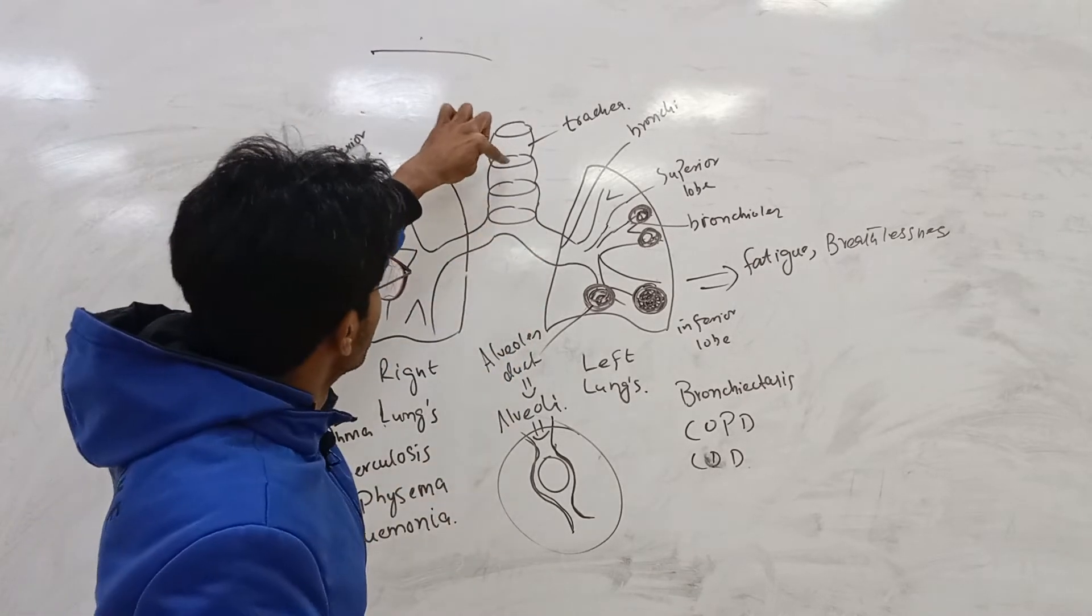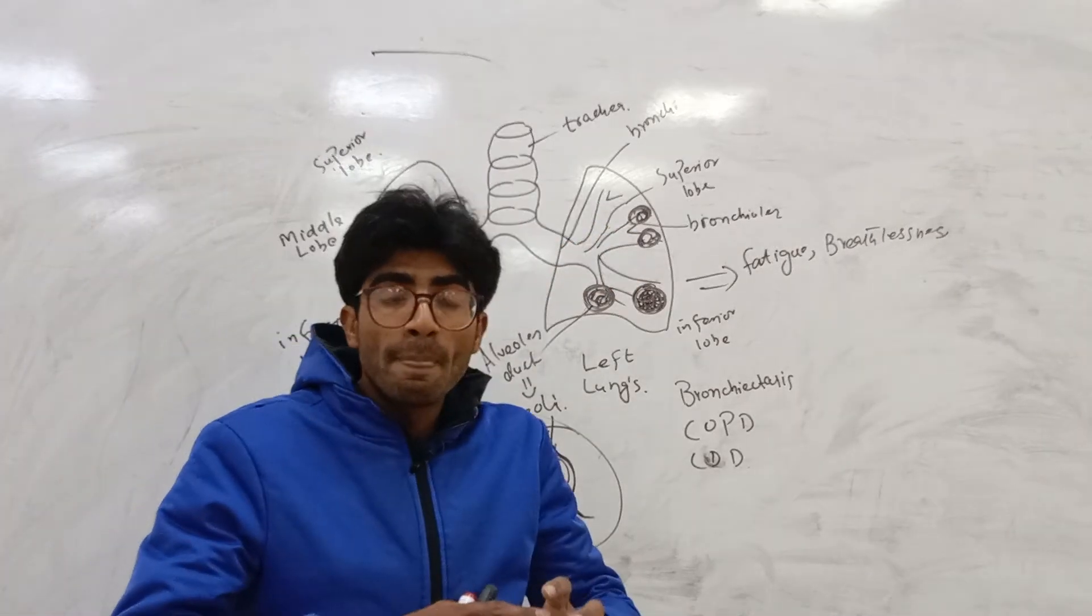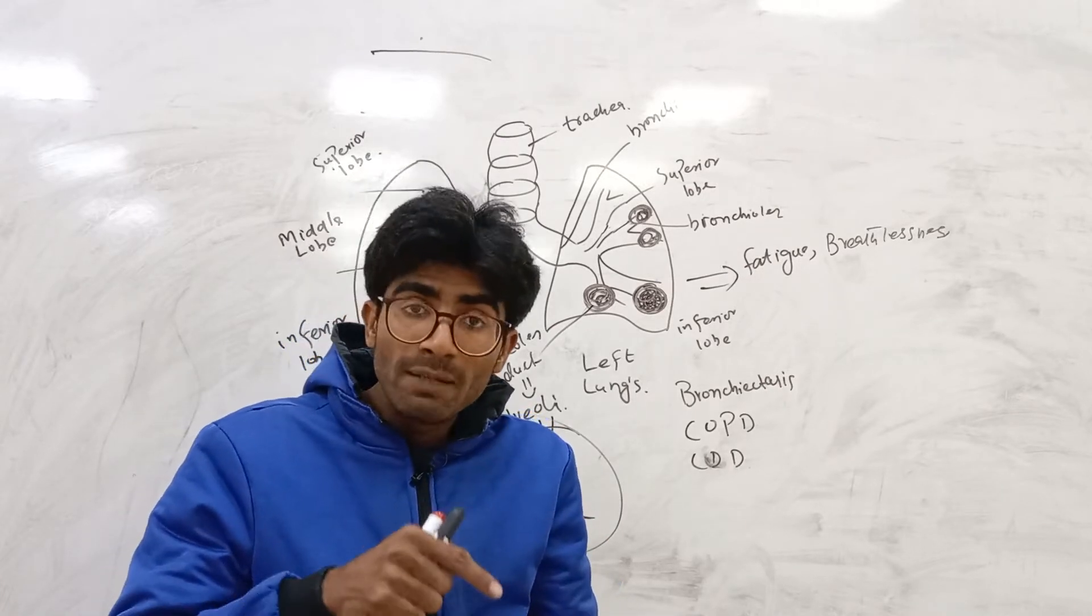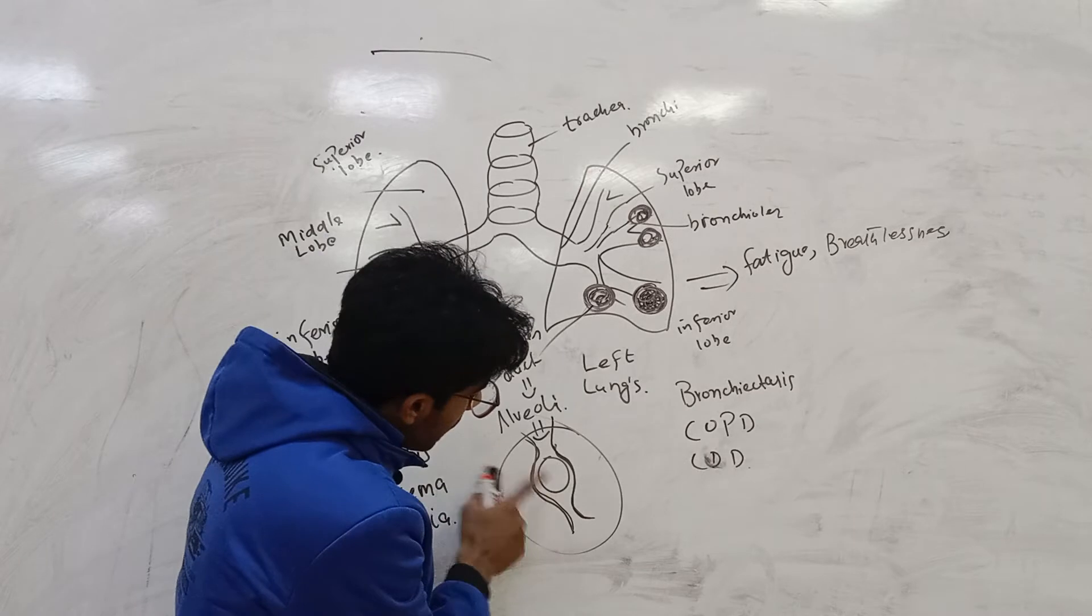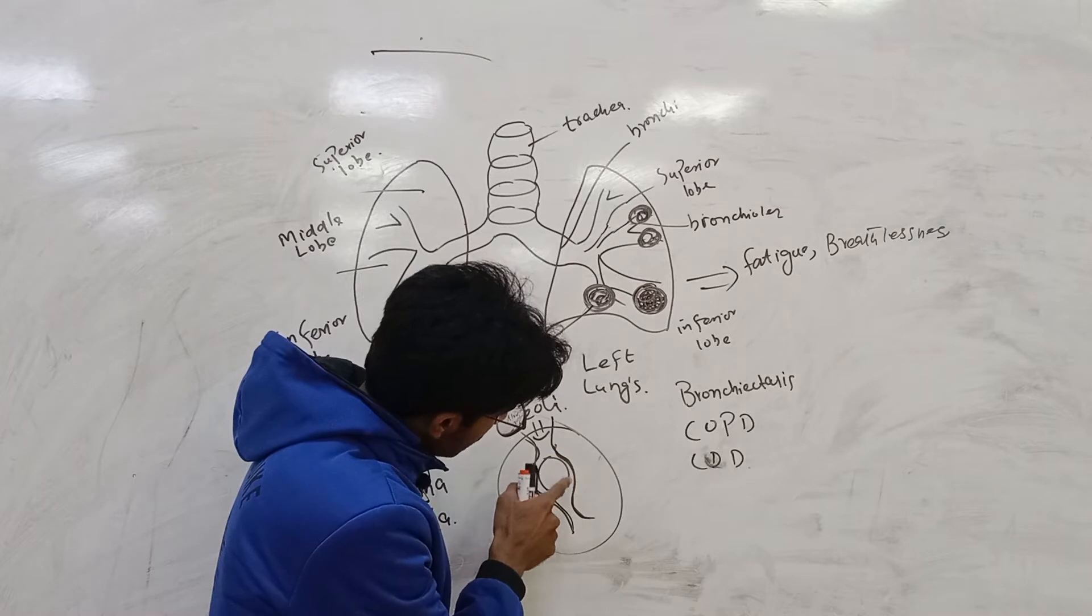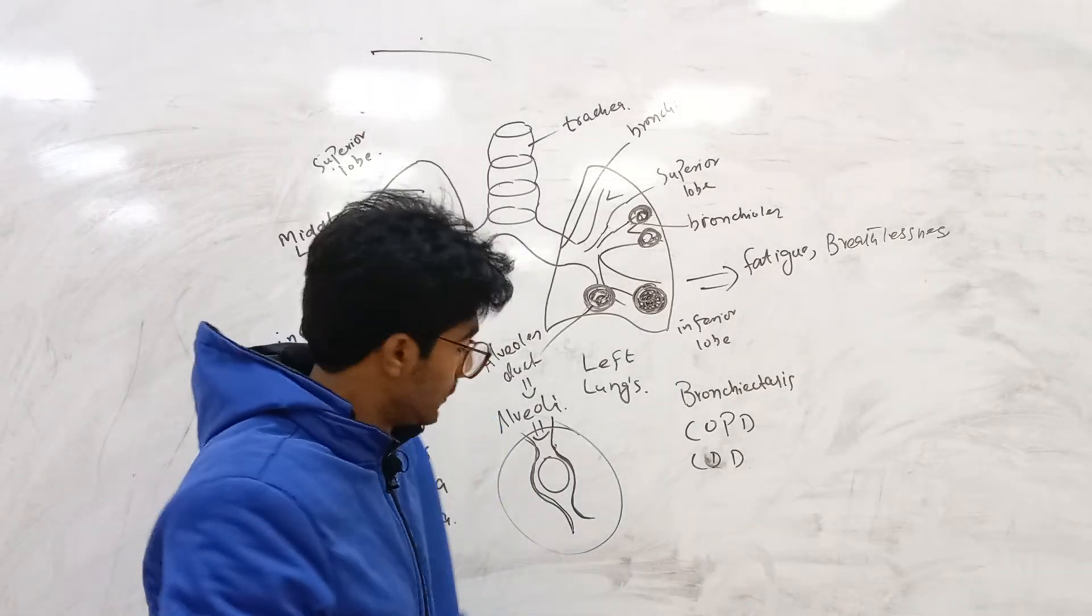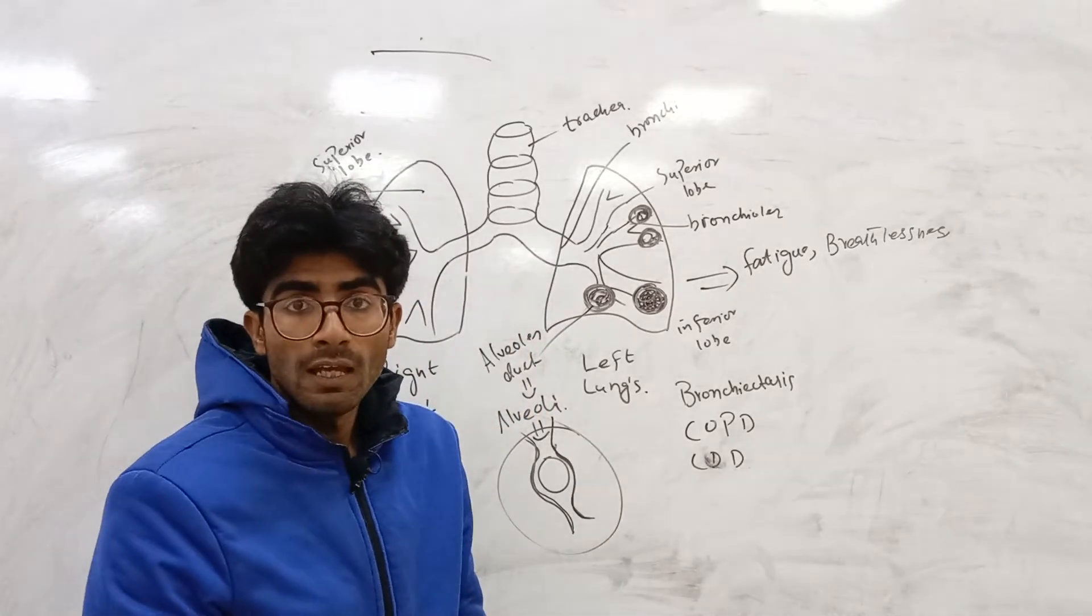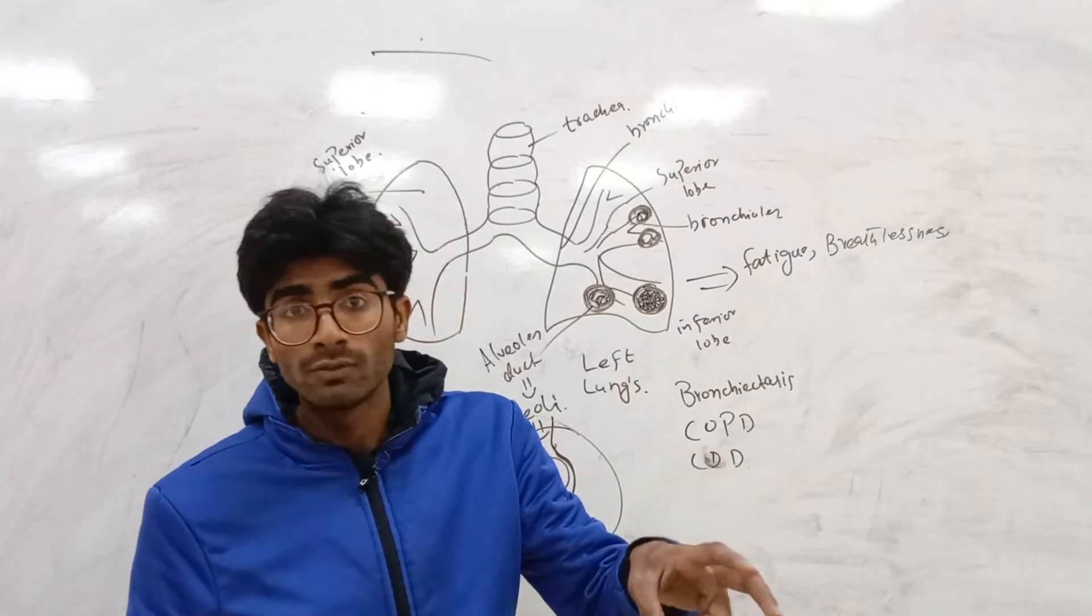Air enters the lungs and goes into the alveoli. Alveoli is actually a balloon-like structure. When air comes and enters into the lungs, it passes and filters the oxygen to the blood. Oxygenated oxygen goes into the blood. When oxygen goes into the blood, it goes to the tissue and from tissue to the organs.